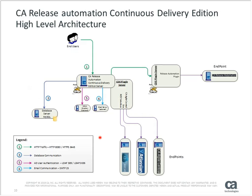End users use web browsers to communicate with the CDE server — the Continuous Delivery Edition server. This server has a connection to its database, which is currently MySQL and can be on the same server or remote. You can configure it to talk to an Active Directory domain controller for authentication. As of version 6.2 currently in customer validation, there is also a notification service — CDE can send emails to users based on actions within the product, such as tasks completed, releases built, or releases started.